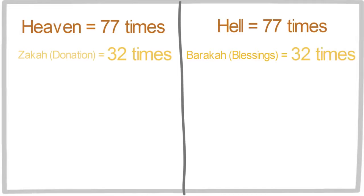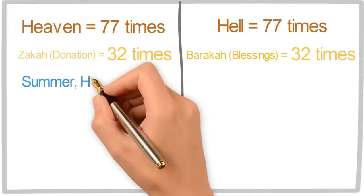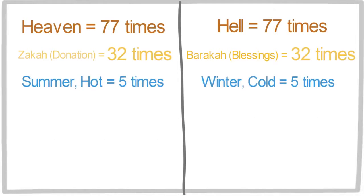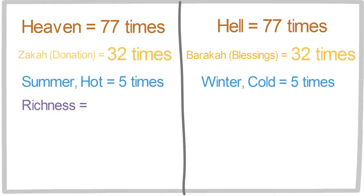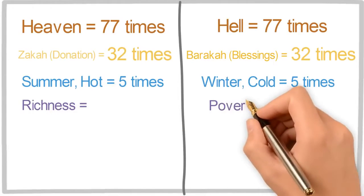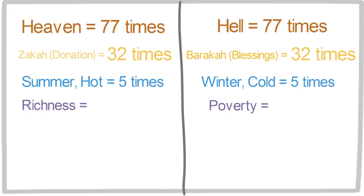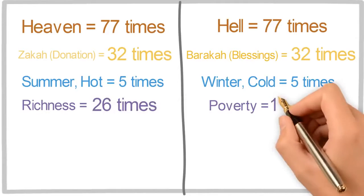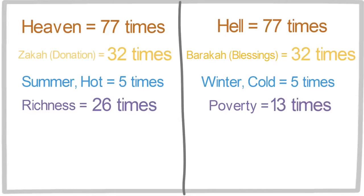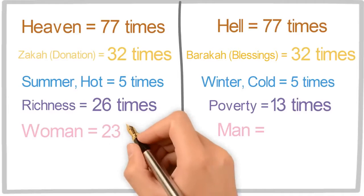Now summer hot and winter cold, those words are equally repeated five times. And richness and poverty, richness is repeated 26 times, whereas poverty is half of 26, which is 13. And woman and man, those are repeated equally 23 times.